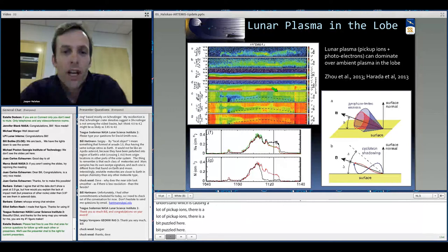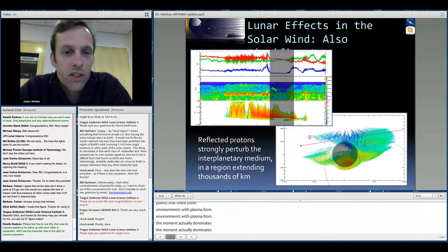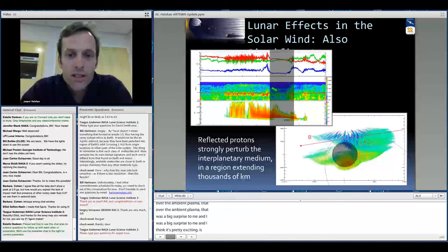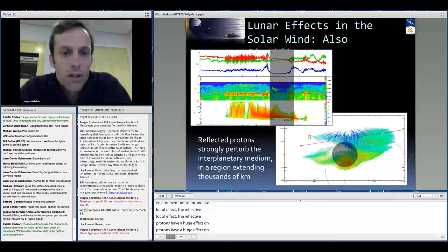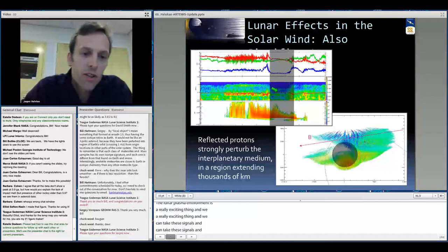I'm running out of time already. I knew that was going to happen. Even if you only try and cover one topic, you run out of time. I'll be quick. I just want to make a couple of points. One is that there are some environments where plasma from the Moon actually dominates over the ambient plasma. That was a big surprise to me. I think it's pretty exciting. And it's not just in unique environments like the tail lobe that the Moon has a big effect. Out in the solar wind, the reflected protons have a huge effect on the upstream magnetic field. You can see these huge waves that are caused there. So the lunar plasma environment is a really exciting thing. And we can actually take these plasma signals and we can trace them back and we can learn what's happening right in the Moon and its atmosphere and near the charged surface.